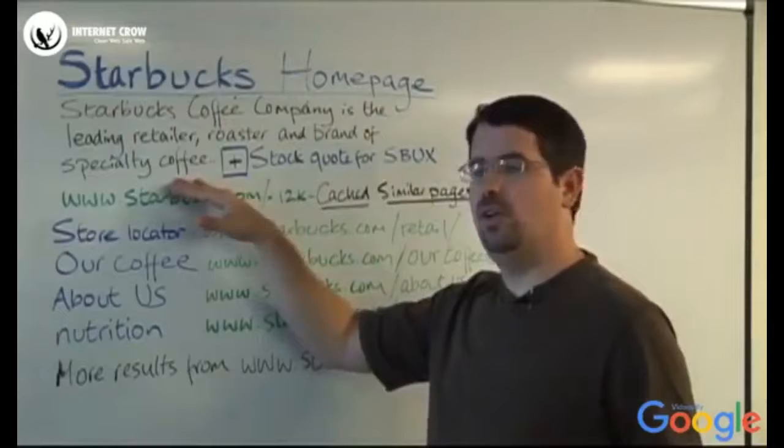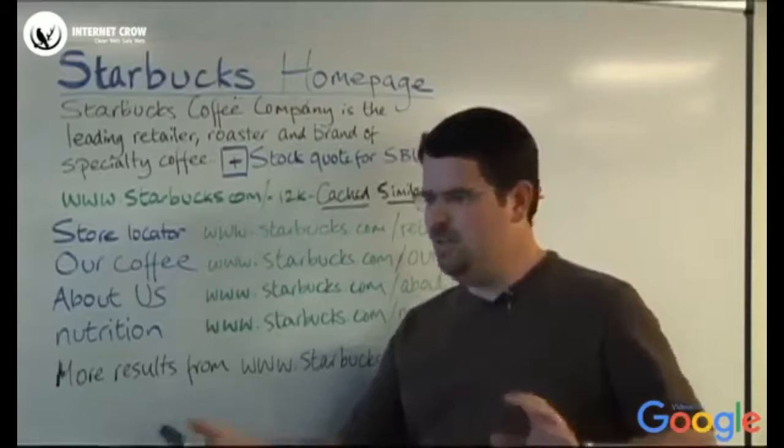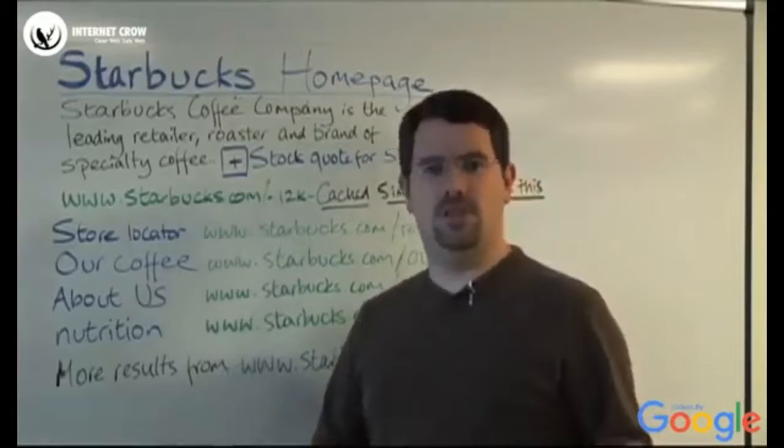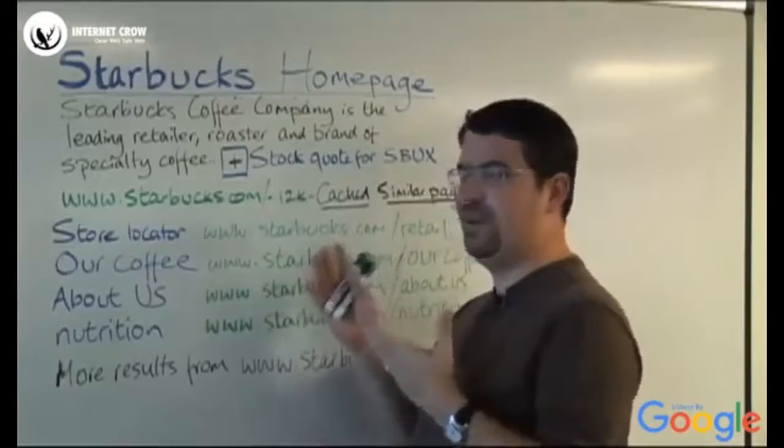Another thing that we sometimes do is we pull the description from a place within the page. So, suppose you've got a phone book and you're looking for somebody's name and the name is way down at the bottom. It's a lot more helpful to show that person's name from the bottom of the page and maybe a few words from either side of that person's name than it is to show the first 50 words from that page. So, we do try to find the most relevant parts of a page. Sometimes it's a single snippet. Sometimes it's multiple parts of a page and combine that together to give people a little bit of context.